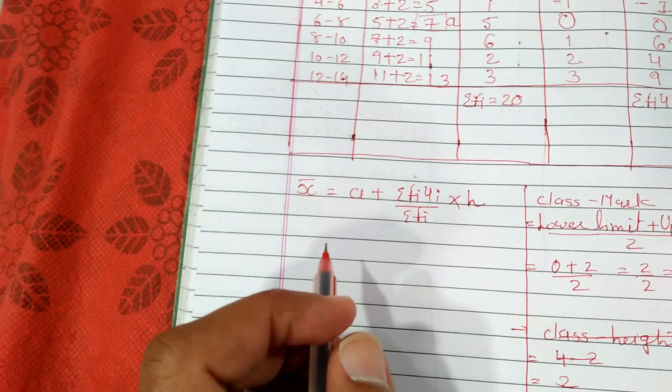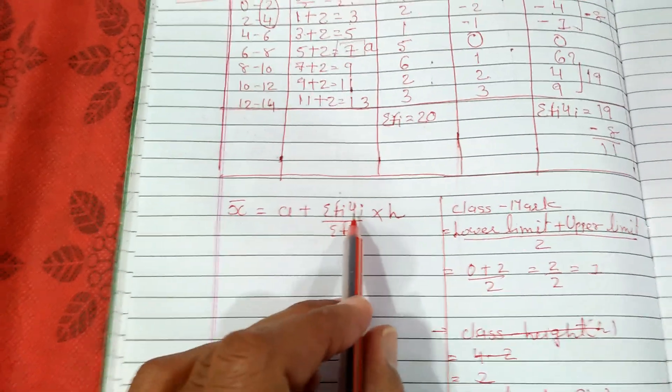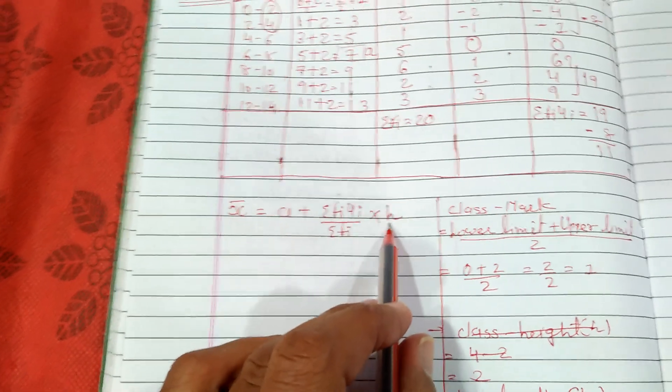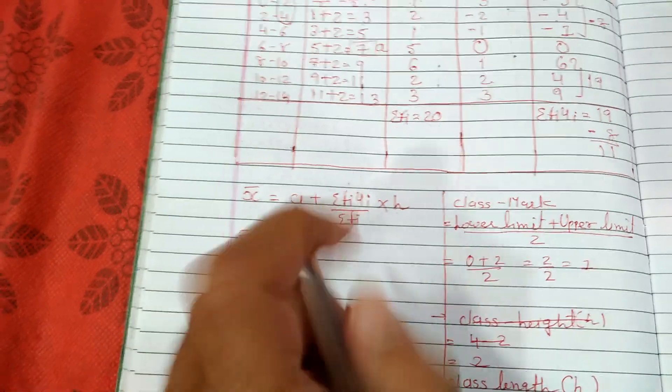Now let us solve this sum by applying the formula, which is: mean x bar equals a plus Sigma Fi ui upon Sigma Fi into H. Let us substitute all values.